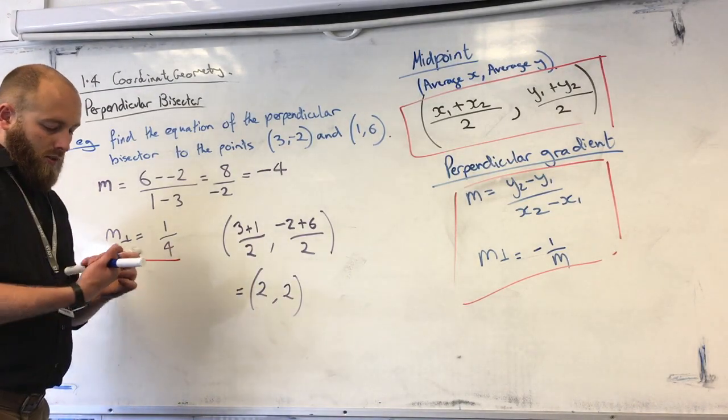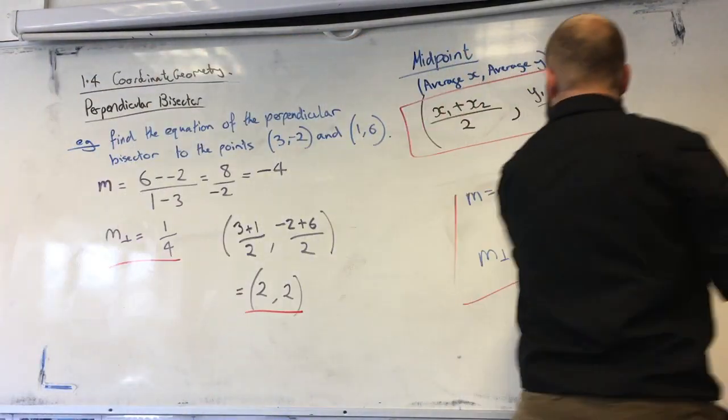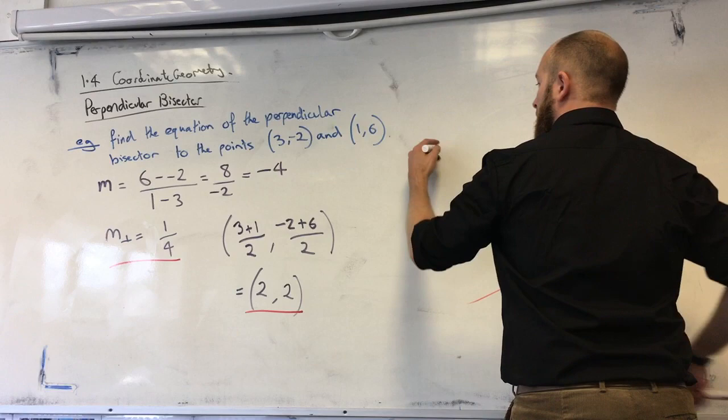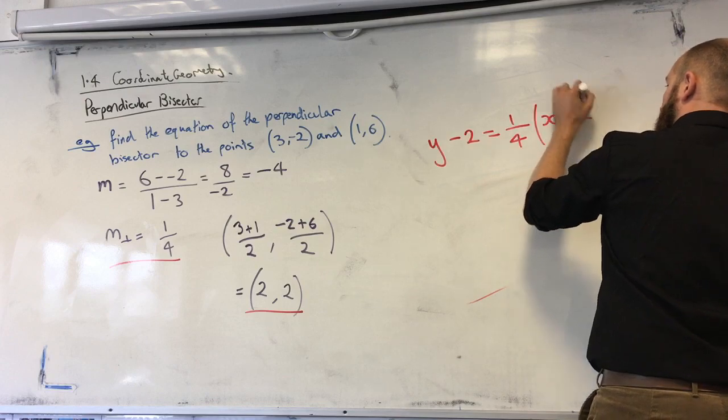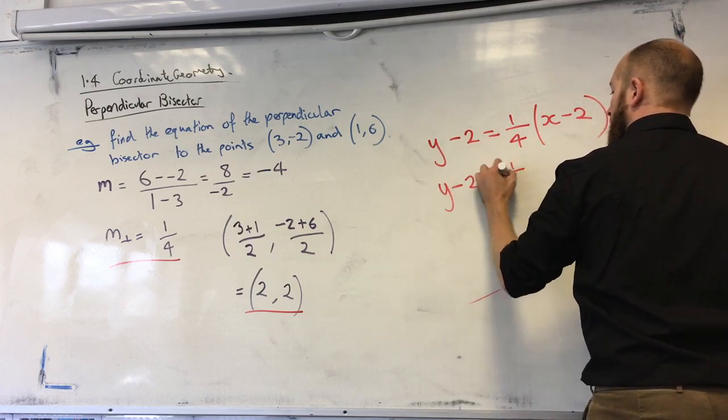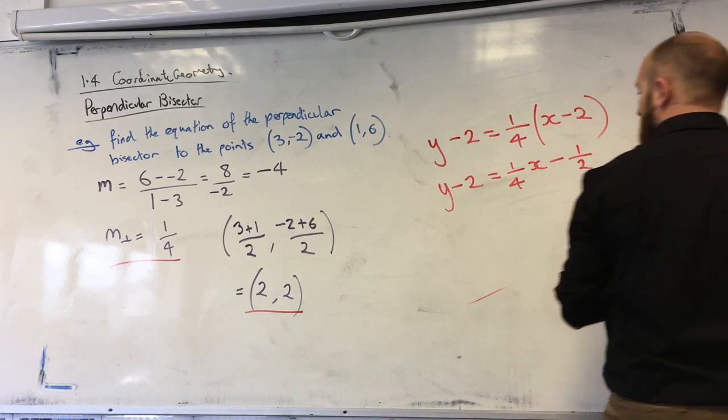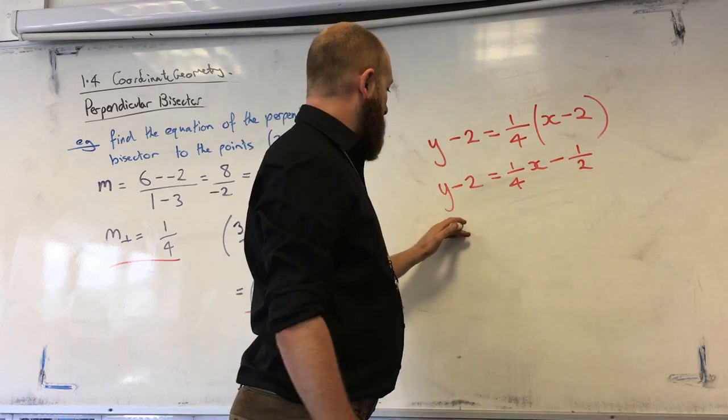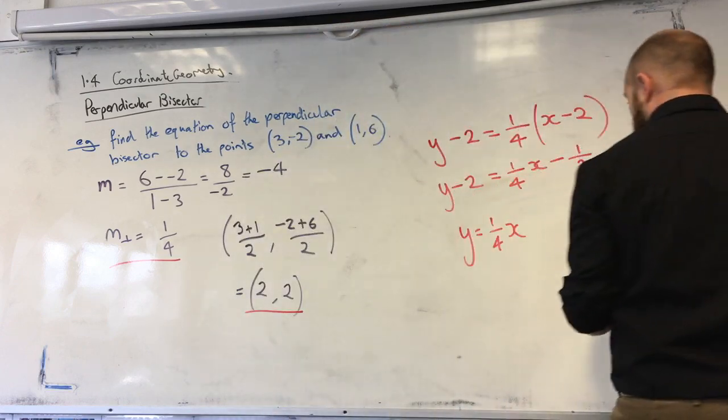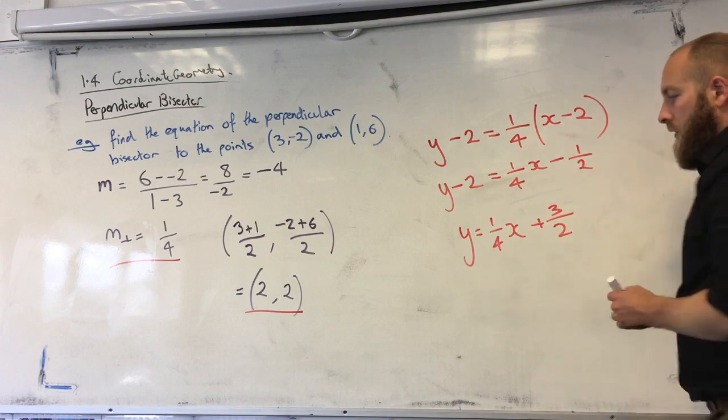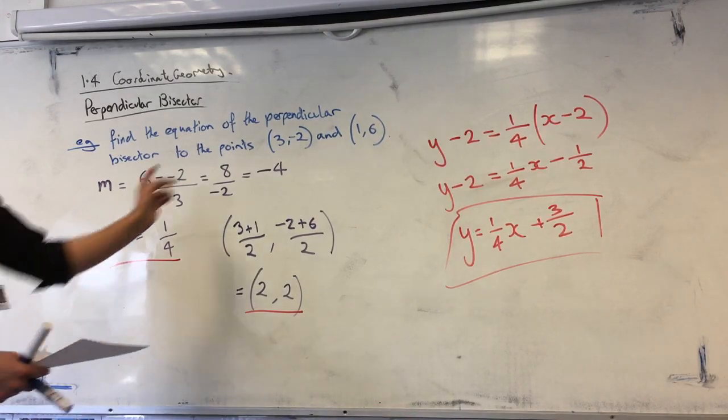So now we've got the gradient, we've got the midpoint. If we put those two things together, we can find our perpendicular bisector. So back to our trusty line equation. y minus 2 equals a quarter x minus 2. Add 2 over there. So y equals a quarter x minus a half plus 2 is going to give us plus 3 over 2. So that is the equation of the perpendicular bisector between those two points.